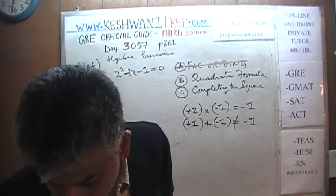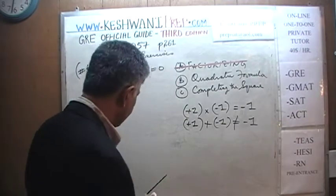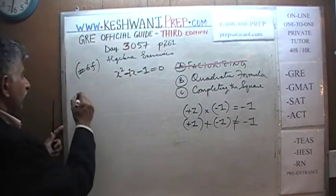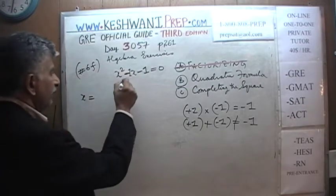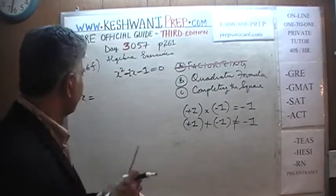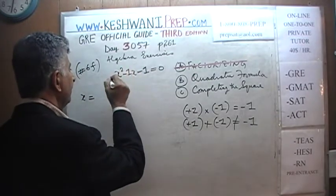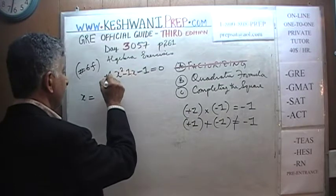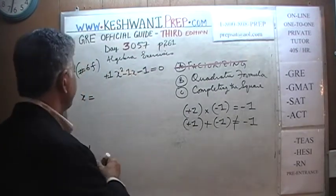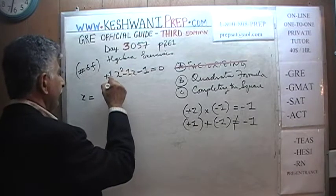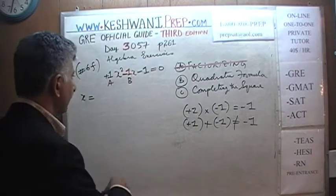Let's use the quadratic formula since that is the most straightforward one. The quadratic formula is x equals negative b plus or minus the square root of b squared minus 4ac, over 2a. Here our b is negative one, our a is positive one, and our c is also negative one.